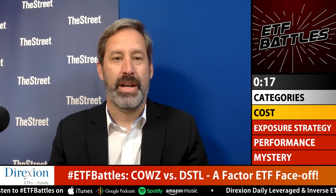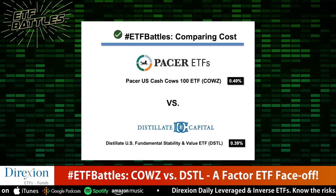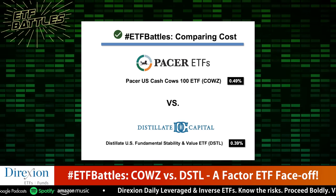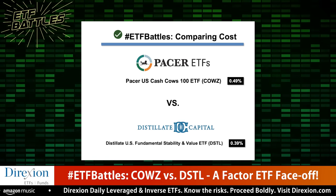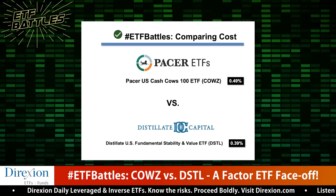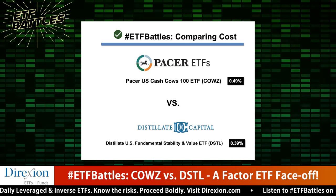Let's start with the first category: cost. On the cost front, COWZ comes in at 49 basis points and DSTL comes in at 39 basis points. The latter is a little cheaper on pure expense ratio. COWZ is a much bigger fund, so trading costs are a little more narrow on that fund. I think overall, if you add them together, the difference is pretty small. So I'm going to call it a split decision on this one.